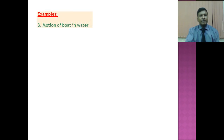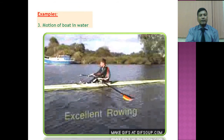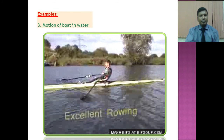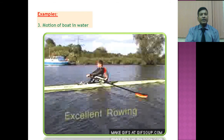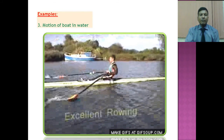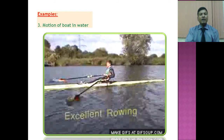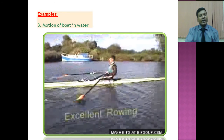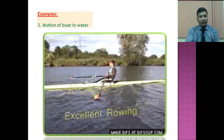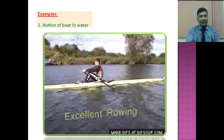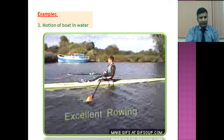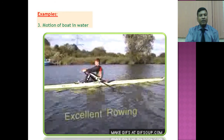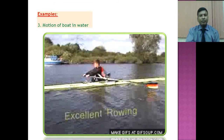The third example is the motion of a boat in water. When a boat is moving in water, the boatman pushes the water in the backward direction using his oar — this becomes the action. At the same time, the water pushes the boat in the forward direction, due to which the boat moves ahead. See the animated diagram: the boatman is pushing the water backward, and the water pushes the boat forward.